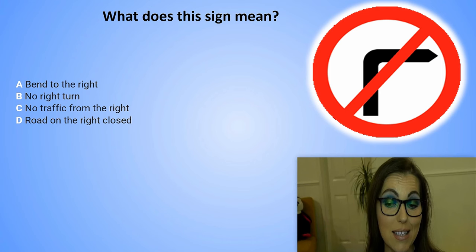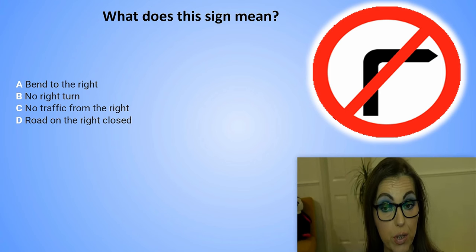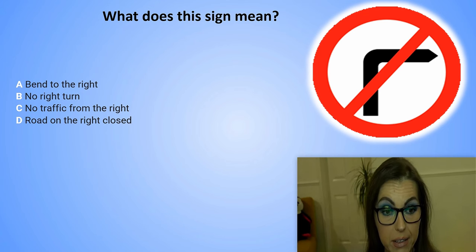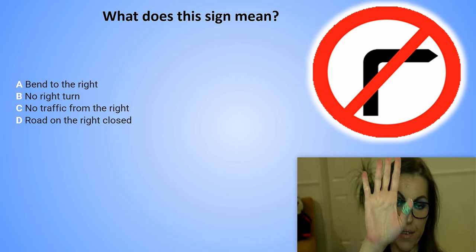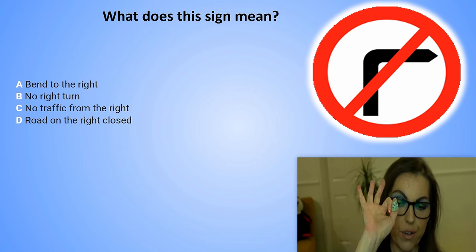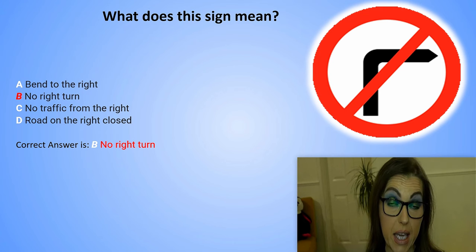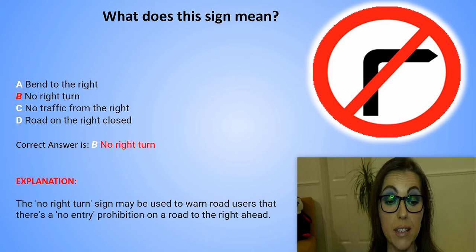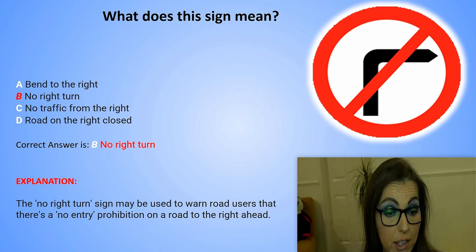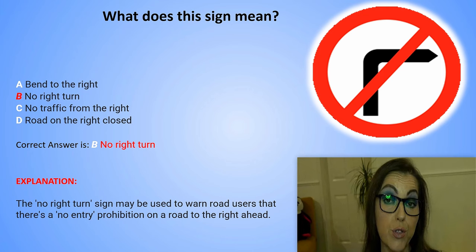What does this sign mean? A. Bend to the right. B. No right turn. C. No traffic from the right. Or D. Road on the right closed. The correct answer is B. No right turn. Explanation: The no right turn sign may be used to warn road users that there is a no entry prohibition on a road to the right ahead.